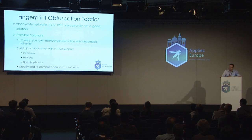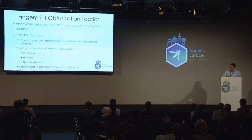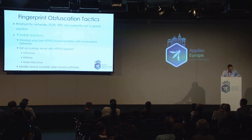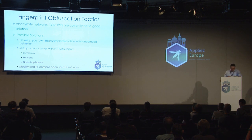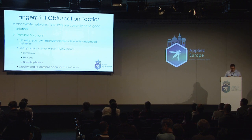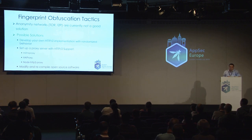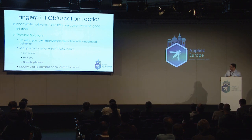Anonymity networks are not a good solution — Tor and I2P do not support H2. There are bug trackers for this; I'm assuming they would soon support H2 each for its own reasons, but currently it's not a good solution. Other possible solutions: first, develop your own H2 implementation — not as hard as it sounds — but when doing that, make sure you're randomizing your behaviors, because consistent behaviors make you distinguishable. The second solution is using a proxy; MITM proxy and HA proxy support H2, and there's a node library called node-http2-proxy that could be used. You can also try to modify and recompile open source software.